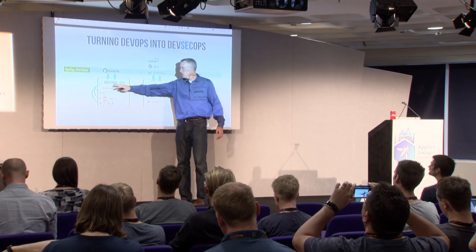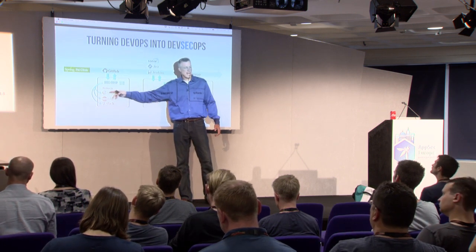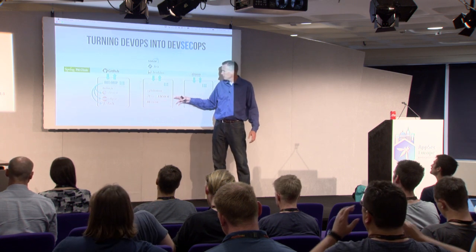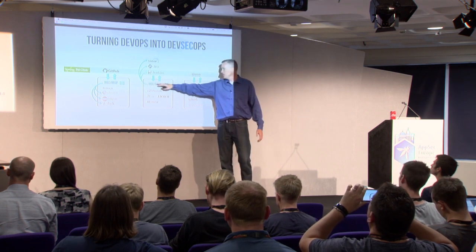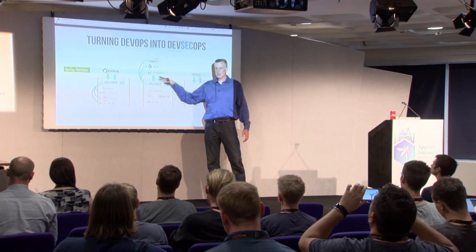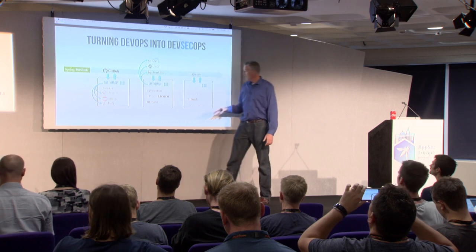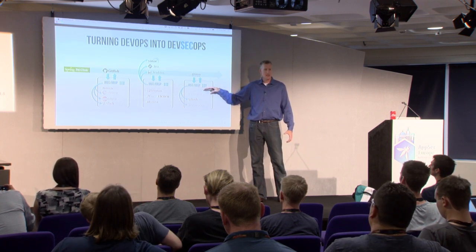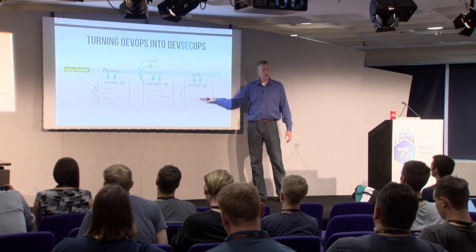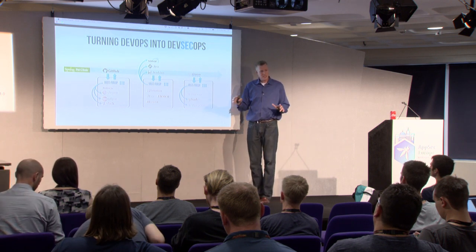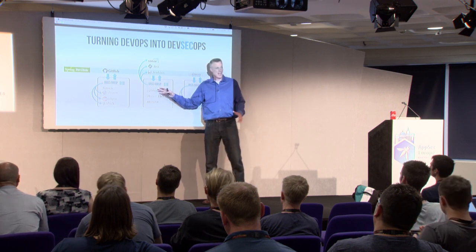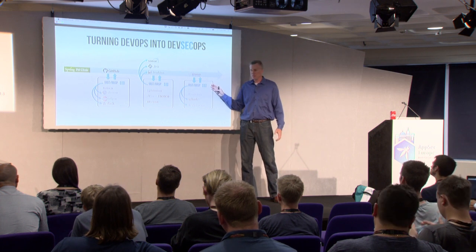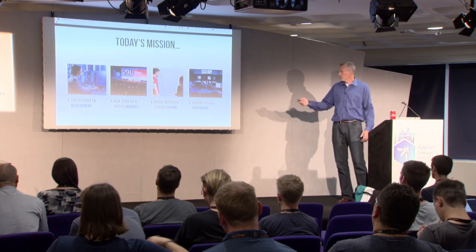We're going to use IAST and RASP in development to automatically identify vulnerabilities and feed them into the tools we're already using in dev — very tight feedback. Then we'll do something with libraries. Then we'll do the same thing in QA and test environments — add IAST and RASP, run our test suite, and get feedback directly into our bug tracking tools and build process. In production, we'll get great telemetry around who's attacking us, what they're doing, and what apps they're targeting — feeding that into our SIEM. Most people talking about DevSecOps are only talking about DevSec — they don't think about ops. SecOps is a really important part of this puzzle.